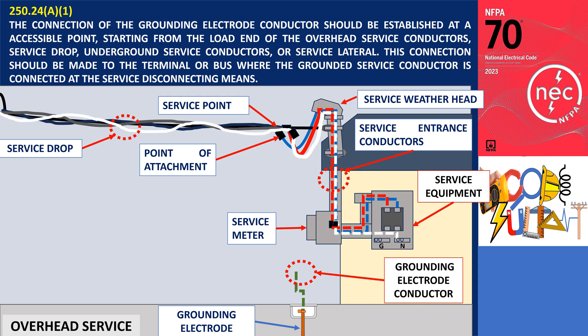The connection of the grounding electrode conductor should be established at an accessible point, starting from the load end of the overhead service conductors, service drop, underground service conductors, or service lateral. This connection should be made to the terminal or bus where the grounded service conductor is connected at the service disconnecting means, as per subsection 250.24(a)(1).